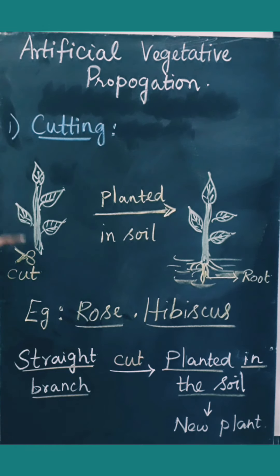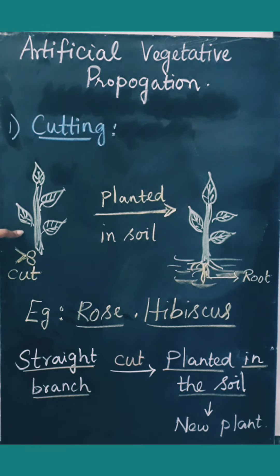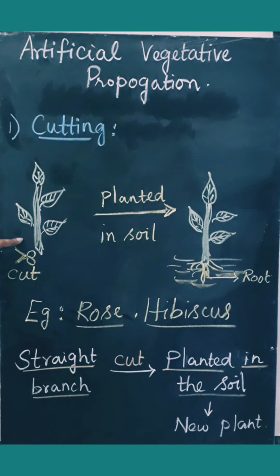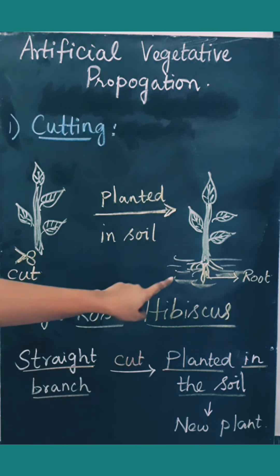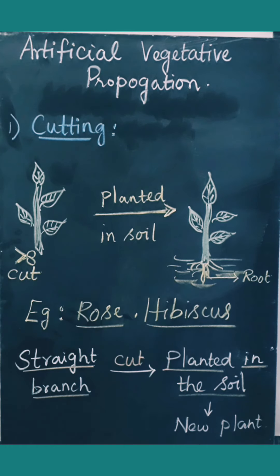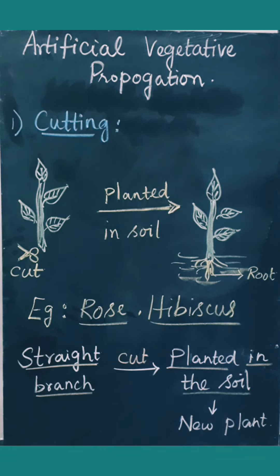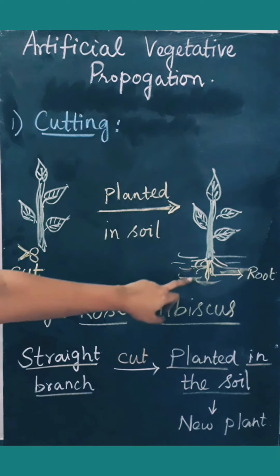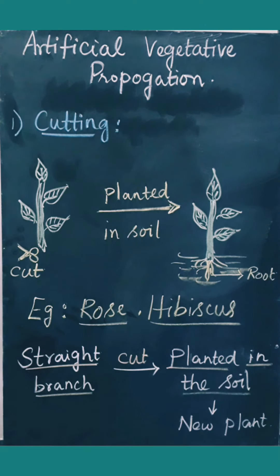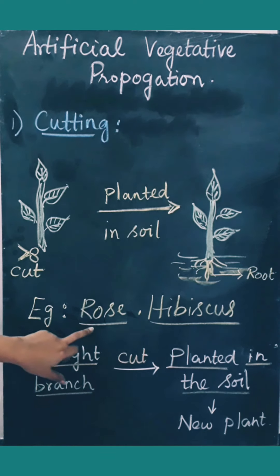The first method of artificial vegetative propagation is cutting. A straight branch of a plant is cut — make sure the branch doesn't have any bends. Preferably a straight branch is cut and it is planted into the soil, then it has to be regularly watered. After a period of time it gives out roots.